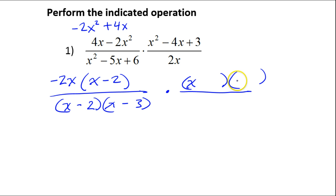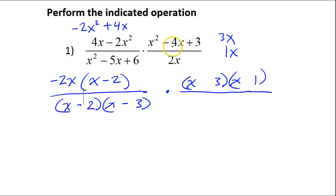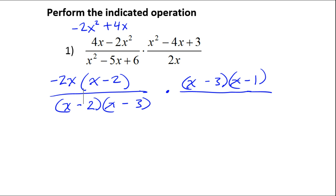Similarly, let's factor the second numerator. x squared factors as x times x, and 3 can only factor as 3 times 1. Inner plus outer equals middle: I have 3x and 1x, trying to get negative 4. So both would have to be negative. Negative 3 times negative 1 is positive 3 — that works. And I'll just bring down my 2x.